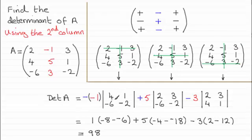For the element 5, it's 2, 3, minus 6, minus 2. And for the element 3, it's 2, 3, 4, 1.